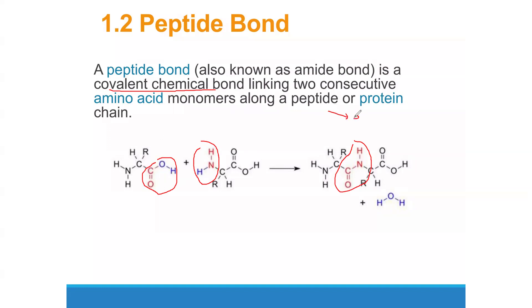To differentiate peptides from proteins: in a peptide we have two to fifty amino acids linked by peptide bonds. When we have amino acids greater than fifty in a molecule, that is considered a protein, not a peptide. So a peptide contains two to fifty amino acids, and proteins contain greater than fifty amino acids linked by peptide bonds.